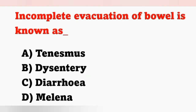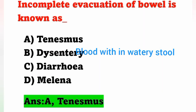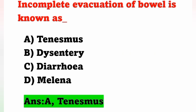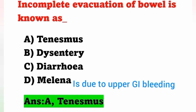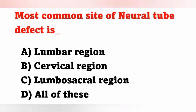Next question: Incomplete evacuation of bowel is known as? Options: A) Tenesmus, B) Dysentery, C) Diarrhea, D) Melena. Incomplete evacuation of bowel — where the patient feels they cannot empty the bowel properly — is known as tenesmus. Option A is correct. Dysentery means blood in watery stool. Diarrhea is frequent passage of motion. Melena means black tarry stool, mainly due to upper GI bleeding.